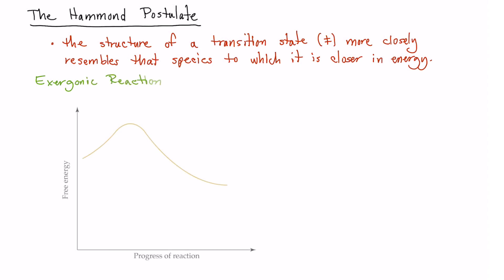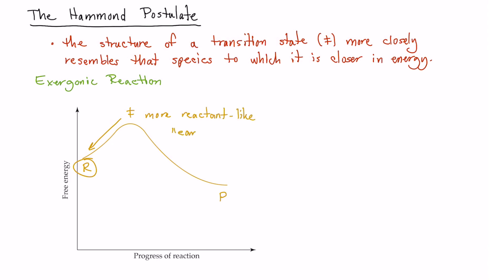Let's take a look at an exergonic reaction. An exergonic reaction is one where the reactants are at a higher energy than the products, so overall the reaction is going downhill — it's lowering its energy. The transition state sits at the highest energy position separating the reactants from the products. In this case the transition state is closer in energy to the reactants, so the Hammond postulate tells us its structure will be closer to the reactants. A reactant-like transition state is often referred to as being early.